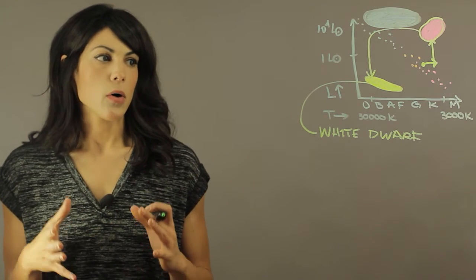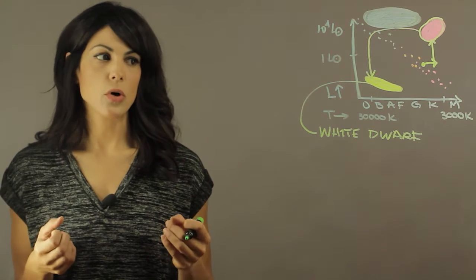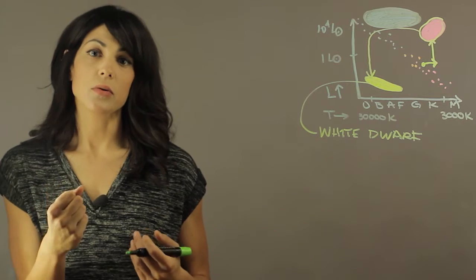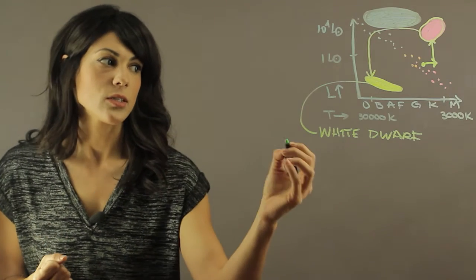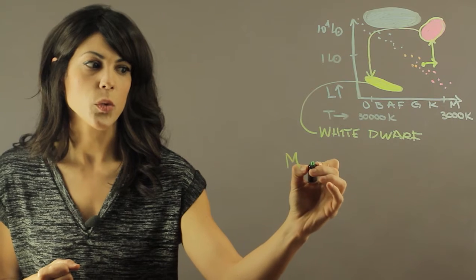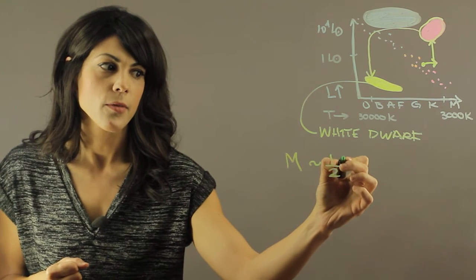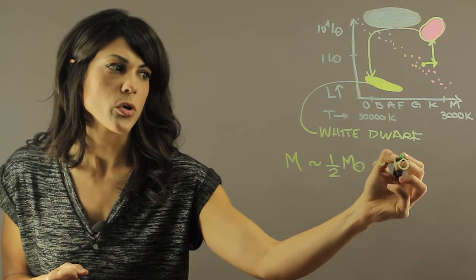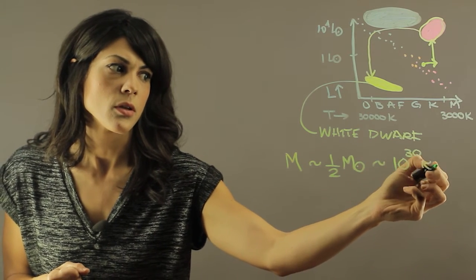So now let's think about how big are these things. We're now just left with the exposed core of a star that wasn't very massive. Generally speaking, the mass of a white dwarf is about half the mass of the Sun, so it's going to be on the order of 10 to the 30th kilograms.